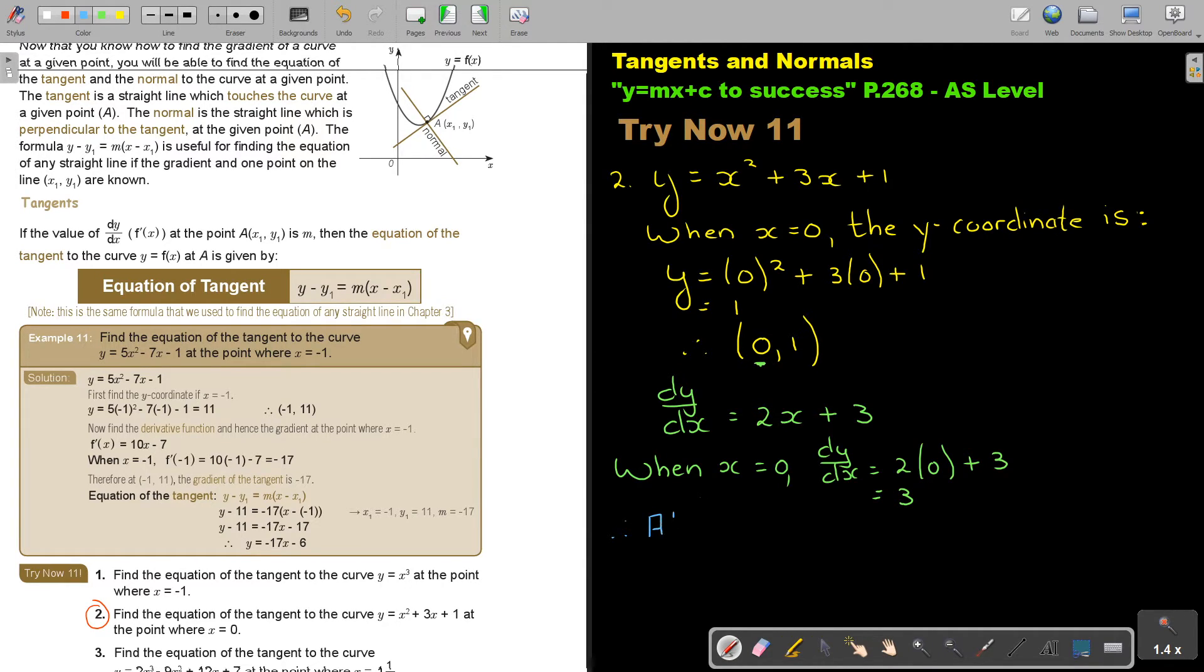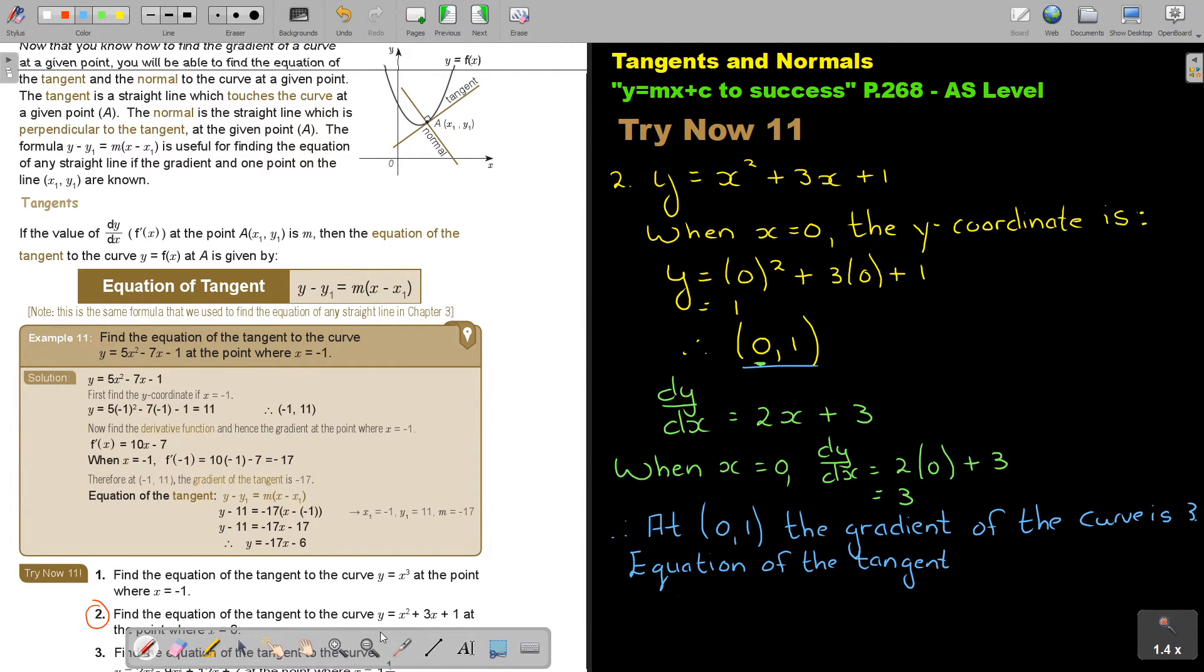So now we're going to go on. And I like to just change colors because we're going to different phases in the sum. So therefore at (0, 1), the gradient of the curve is three. So the equation of the tangent, and now we're just going to use this formula of a straight line.